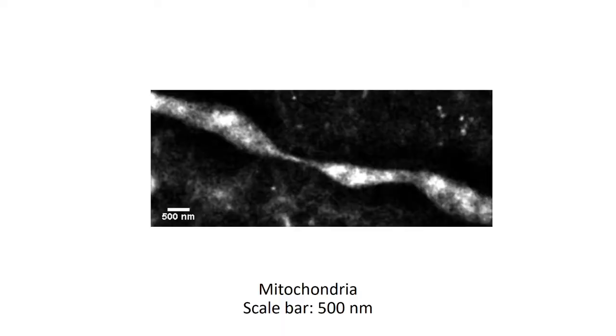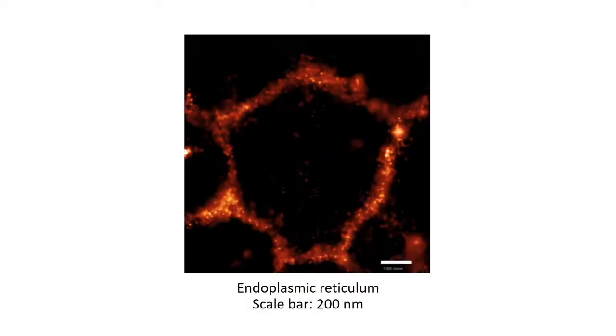This new approach is interesting for the future because now we're able to take high-resolution images in living cells of many different organelles — for example the mitochondria, endoplasmic reticulum, and Golgi apparatus. And with this new tool in hand, we really paved the way for our next study involving mitochondrial fission. Now we can capture the constriction dynamics of mitochondria with relatively high spatial and fast temporal resolution.